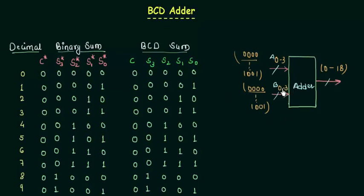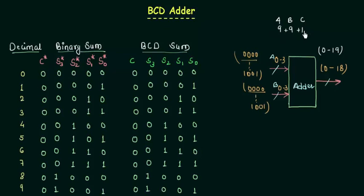Remember, I am not considering the carry from the previous sum. In some books they consider it, but to keep it simple it won't make a great change. If we do consider the carry from the previous sum, then the sum will be 0 to 19, because if A is 9, B is 9, and the carry is 1, then 9 plus 9 plus 1 gives 19.